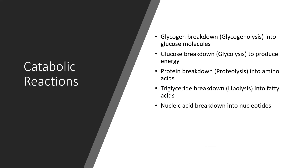Examples of catabolic reactions include glycogen breakdown, also known as glycogenolysis, where glycogen is broken down into glucose molecules. It also includes glucose breakdown to produce energy, also known as glycolysis; protein breakdown into amino acids, or proteolysis; triglyceride breakdown into fatty acids, or lipolysis; and nucleic acid breakdown into nucleotides.